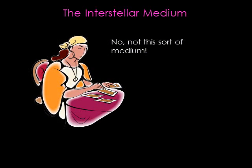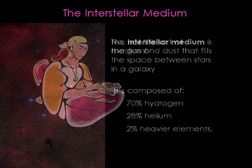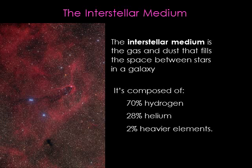We often think of space as being empty. It certainly has less stuff than what we're used to on Earth, but it's not completely empty. There's at least a little gas and dust in between the stars. This gas and dust is referred to as the interstellar medium. It's mostly helium and hydrogen with a small amount of heavier elements.